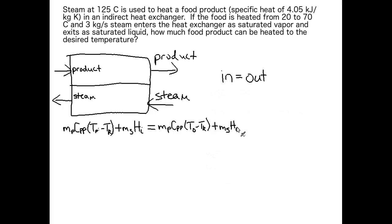And the reason we know its boiling point is 125°C is because it starts as saturated vapor—vapor at its boiling point—and leaves as saturated liquid, liquid at its boiling point. Therefore its boiling point is 125°C because that's what temperature it is in the heat exchanger. So it stays 125°C all the way through that heat exchanger.